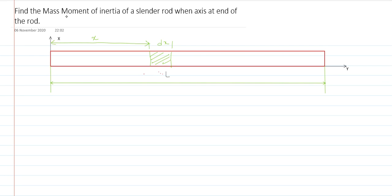Hi everyone, today we are going to discuss the mass moment of inertia of a uniform rod or slender rod when the axis is at the end of the rod. Here, slender rod means the diameter is negligible, so we have only length, not a diameter. In this figure you can observe this is the length of the rod.